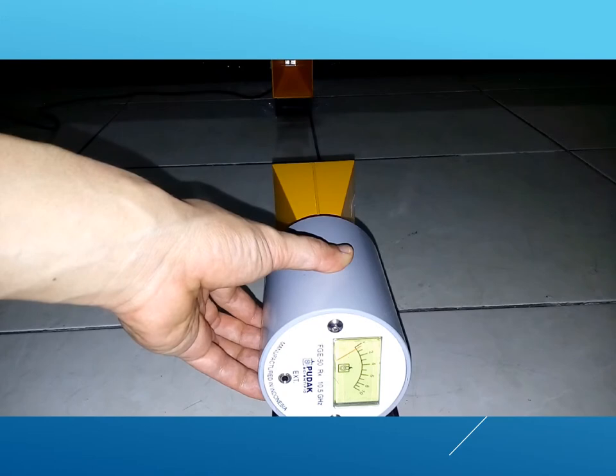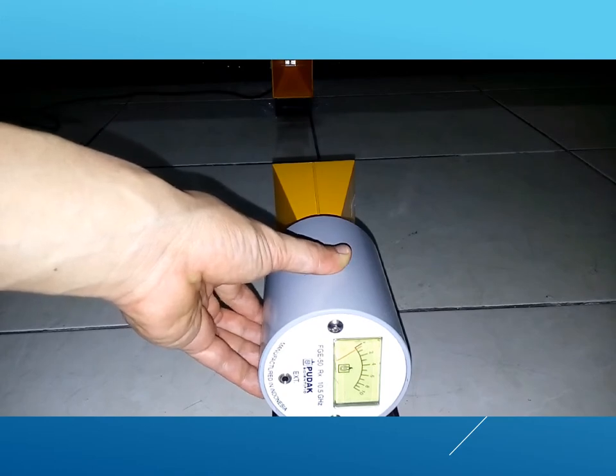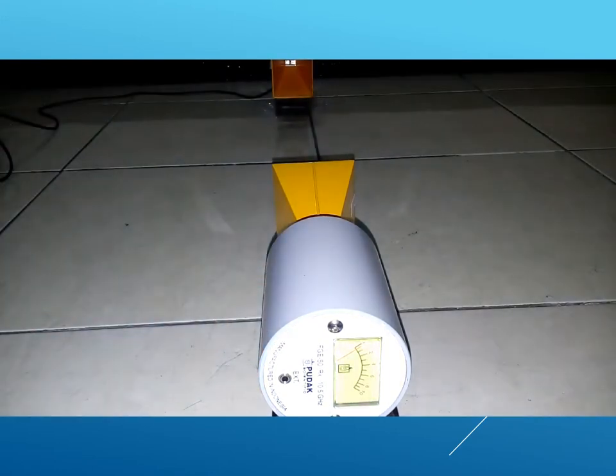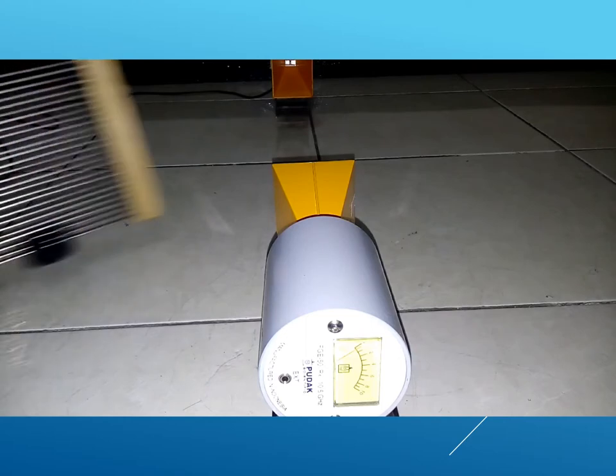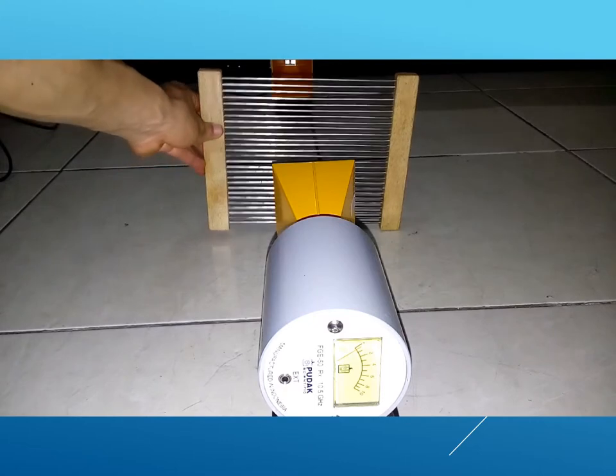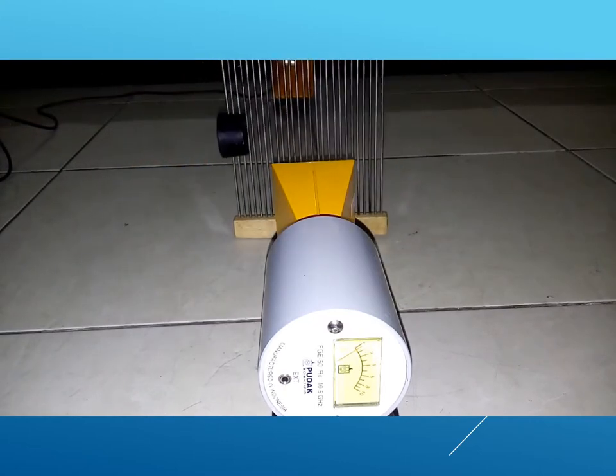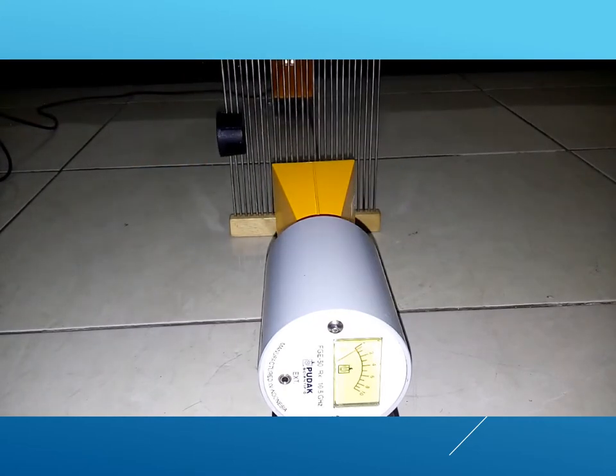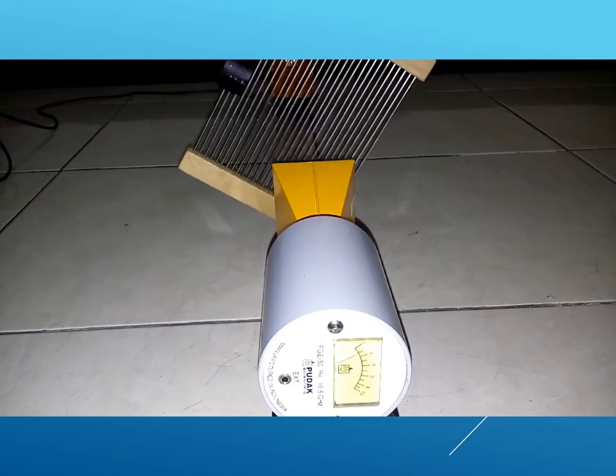Next we start with the receiver oriented horizontally. It shows zero reading without the grating. It stays zero when the grating is placed horizontally as well as vertically. But the intensity increases as the grating is rotated at some angle and reaches maximum at around 45 degrees.